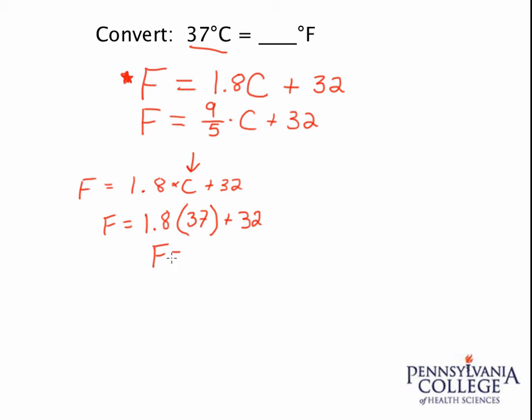Notice I'm showing every single step here. If you're able to use your order of operations, that's fine, but it doesn't hurt when you're practicing to show each step. So the first thing I'm going to do is multiply 37 times 1.8, and I get 66.6.